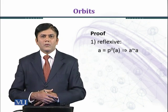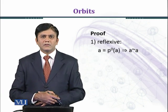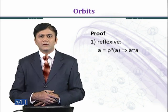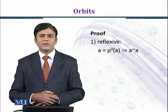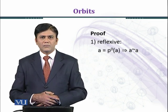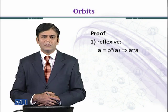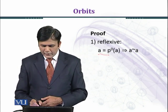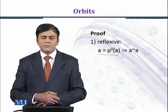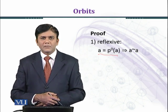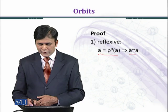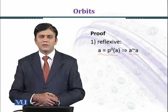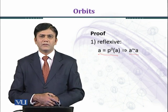To prove this is an equivalence relation we need to establish reflexive, symmetric, and transitive properties. Let's start with establishing the reflexive property. A relates to itself via P^0(A), which implies that A is equivalent to A. Therefore the reflexive property is satisfied.